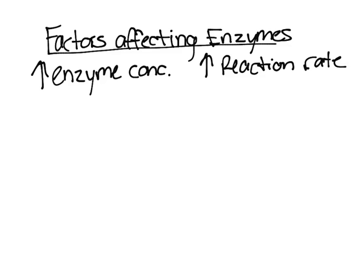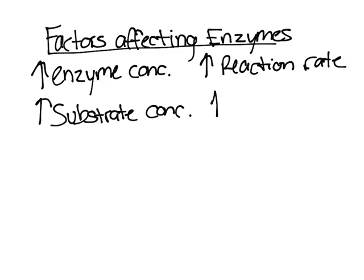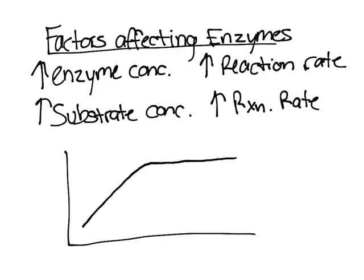Another thing that affects reaction rate is substrate concentration. Substrate concentration is essentially the concentration of the thing that the enzymes act on — enzymes act on substrates. So if you increase that, you will increase the reaction rate, but only to a certain extent, because if you only have a certain amount of enzymes, you can increase it, increase it, increase it, and eventually you'll hit a plateau where there's just no more enzymes to be used.